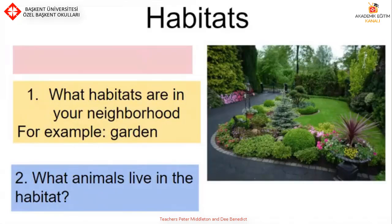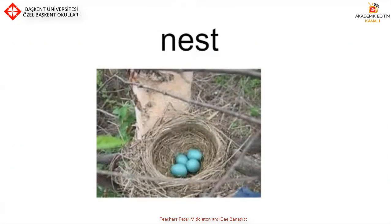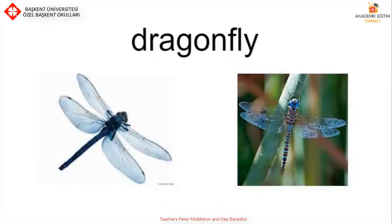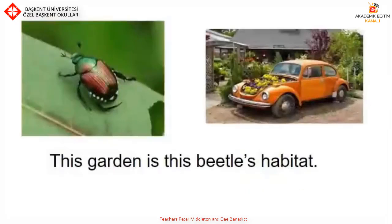You can find habitats in your neighbourhood — places near your house. For example, a garden. What animals live in the garden? What habitats can you think of in your neighbourhood and what animals can be found there? This is a nest. Where is this nest? Which habitat is it in? What's in the nest? This is a dragonfly. Where does the dragonfly live and why does it live there? This is a garden with a beetle. What other animals are in this habitat?